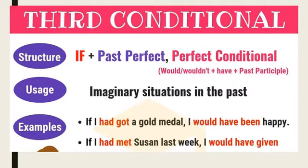For example: 'If I had got a gold medal, I'd have been happy.' 'Had got' — this is 'had' with verb three. The second part, 'I'd have been', is 'would have' with verb three. This is the third conditional. How do you know? Because we have 'had + verb three' and 'would have + verb three'. The function is imaginary situations in the past.